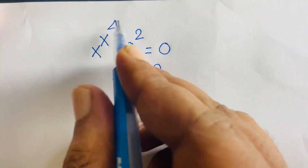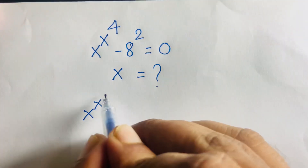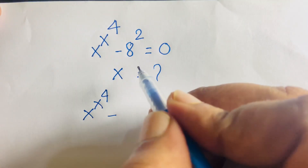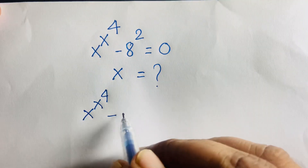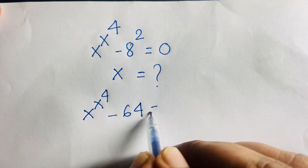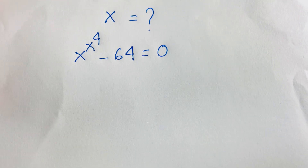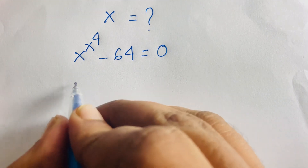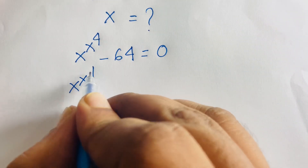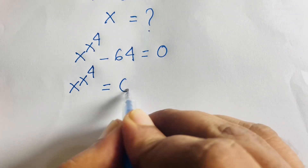So first of all, I can say here is x to the power x, power is 4, minus 8 squared, so it will be 64, is equal to 0. Then this equation becomes x to the power x, power is 4, is equal to 64. I move this minus 64 to the right side, so it will be positive.